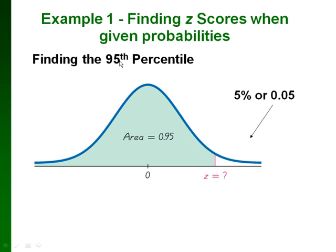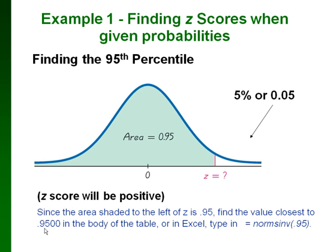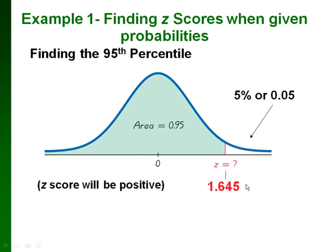Here's an example: if we're trying to find the 95th percentile, that means 95% of the values are less than our specific z-value, and we're trying to find what that z-value is. So we know the area to the left of our z-score is 0.95. We look up 0.95 in the middle of the table — and since our z-score is to the right of 0, we know it's positive. In Excel, type in equals NORMSINV(0.95). The value we get is 1.645.